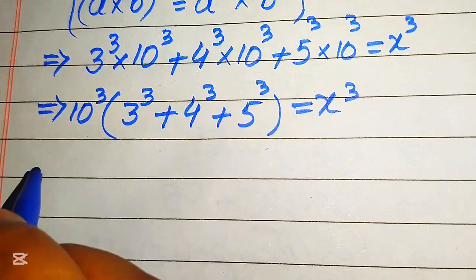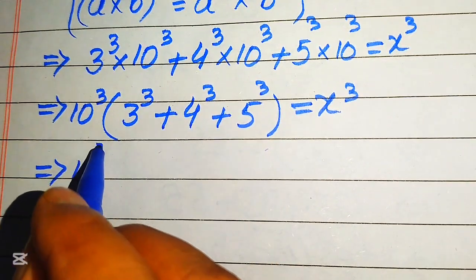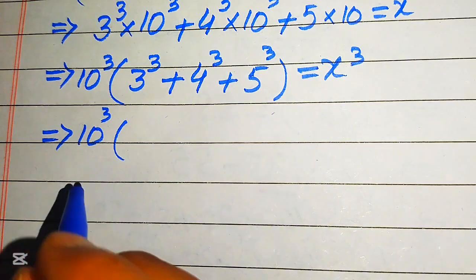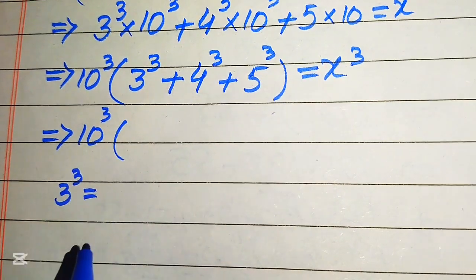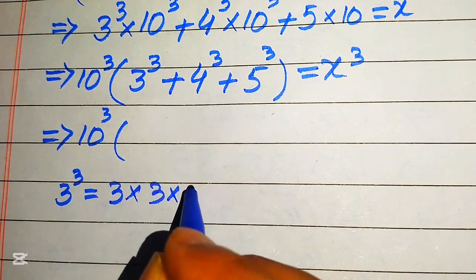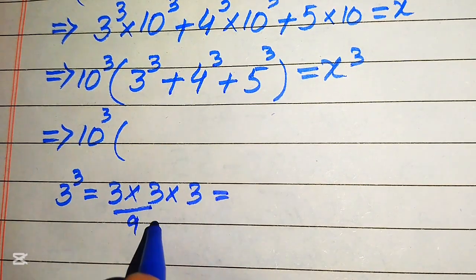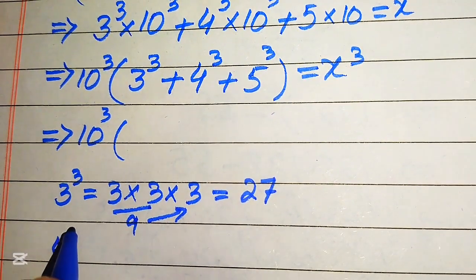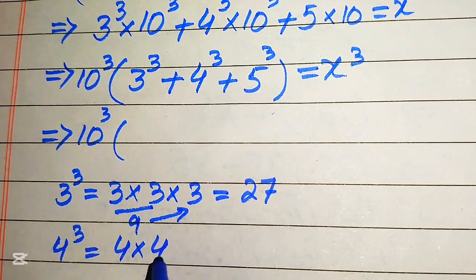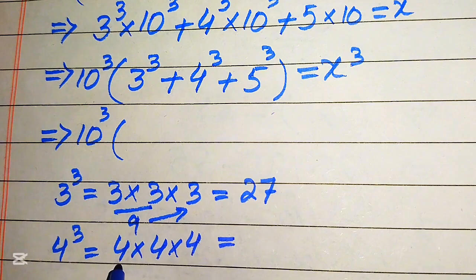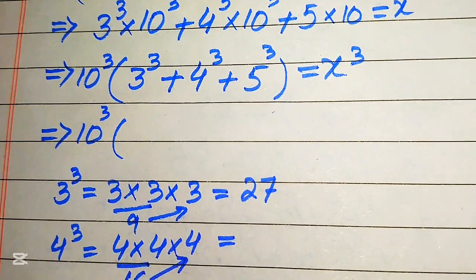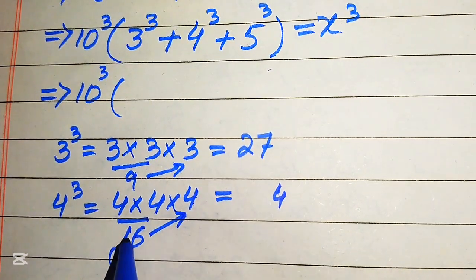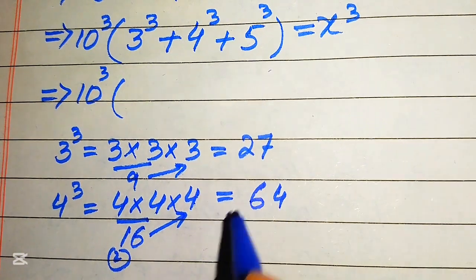Now we simplify the bracket terms. 3 to the power 3 means multiplying 3 three times: 3 times 3 is 9, and 9 times 3 is 27, so 3 cubed equals 27. For 4 cubed: 4 times 4 is 16, and 16 times 4 is 64, so 4 cubed equals 64.